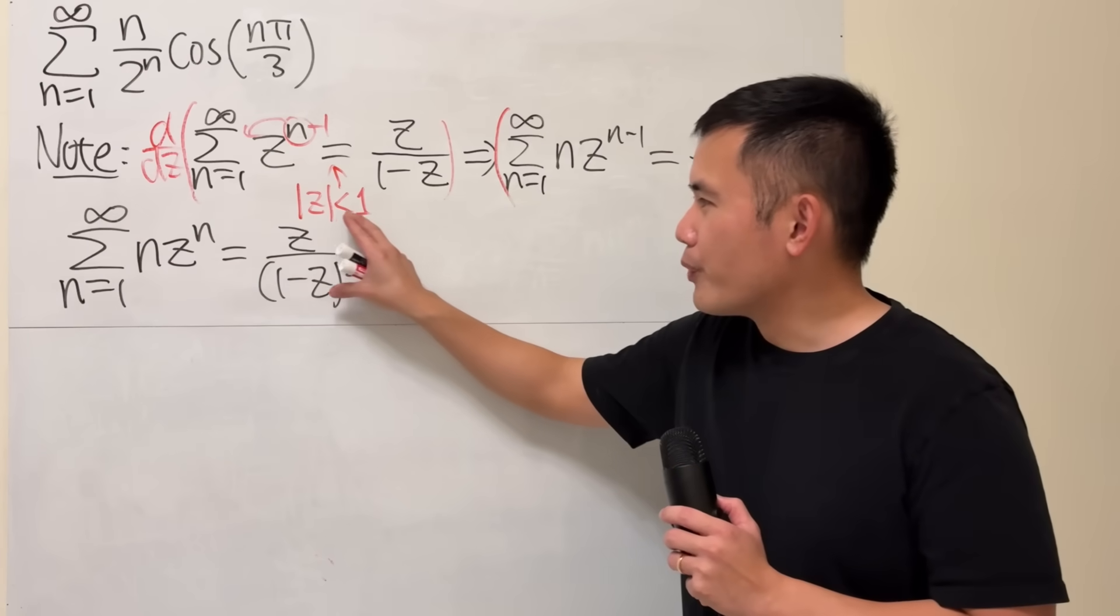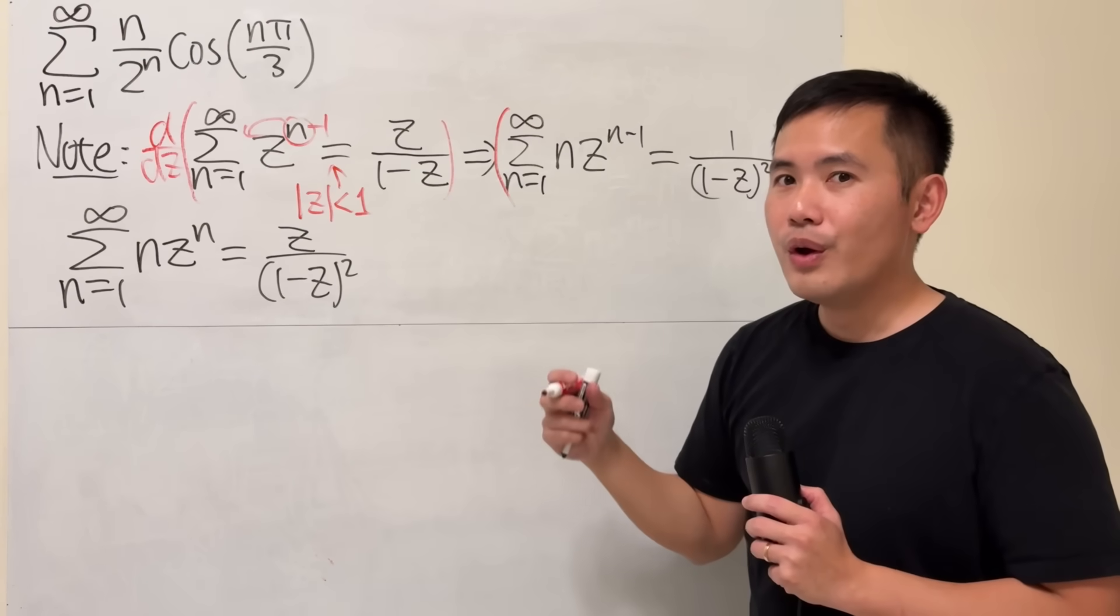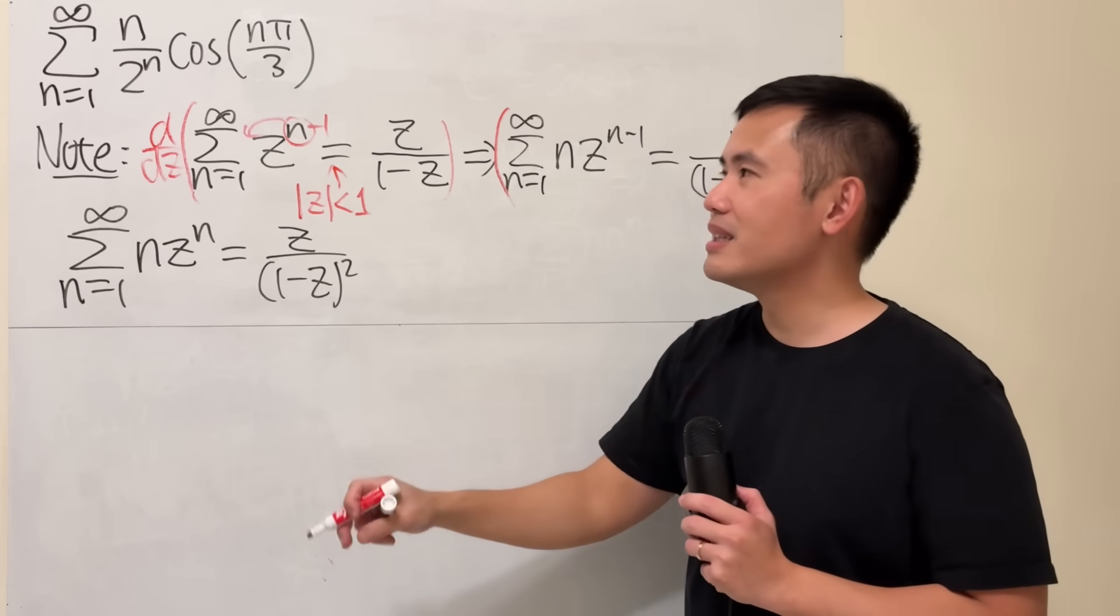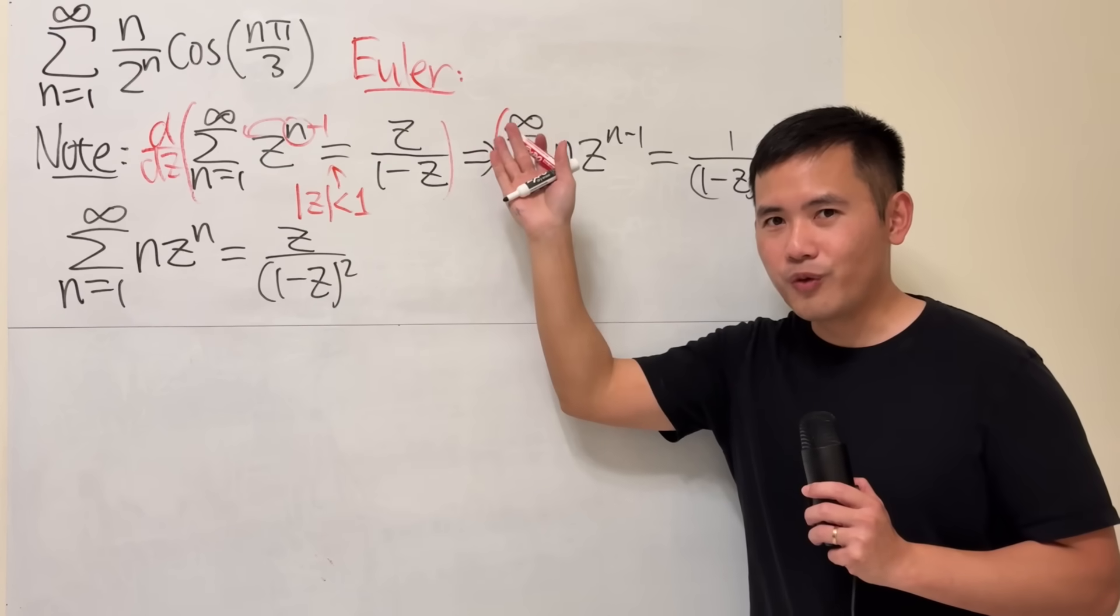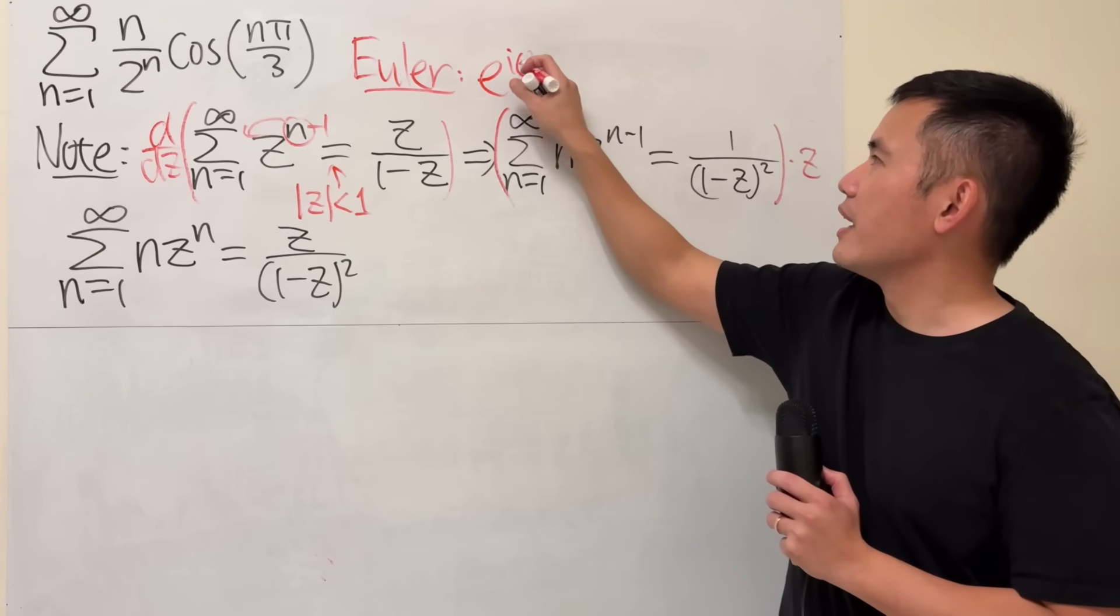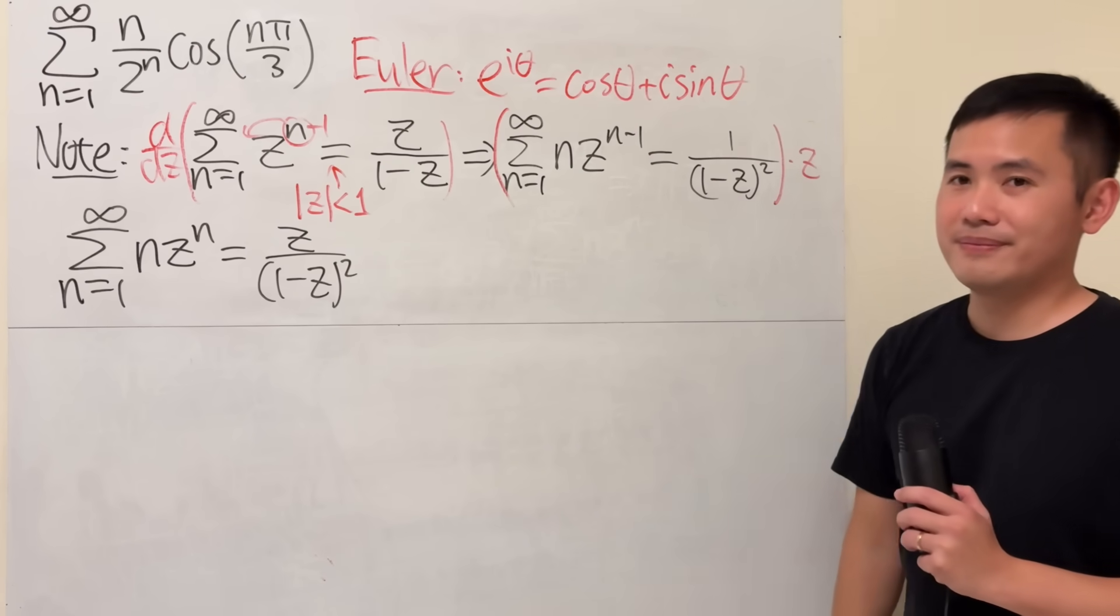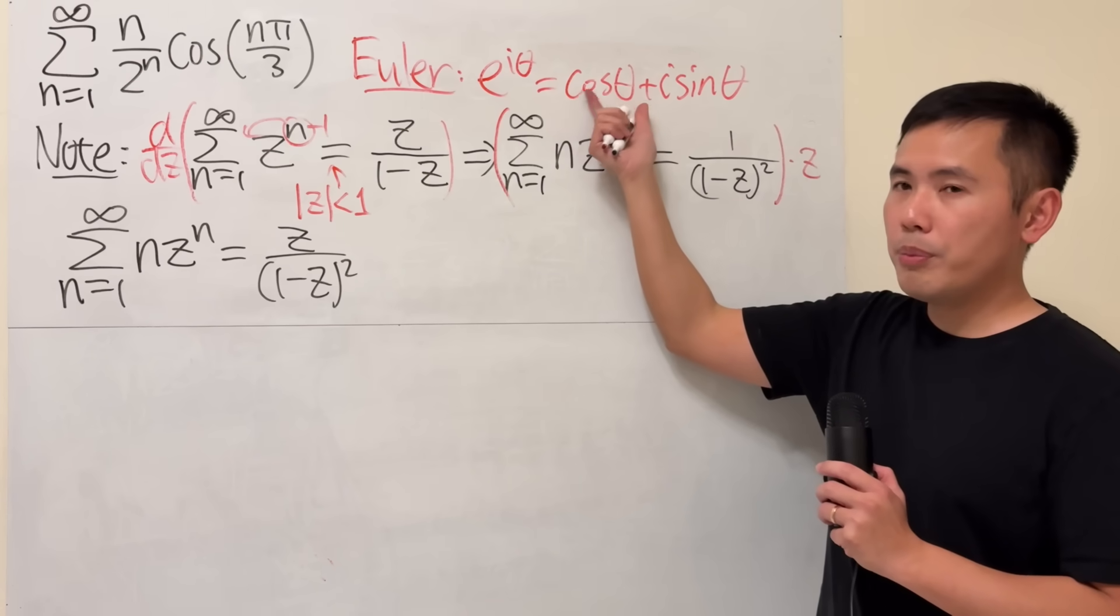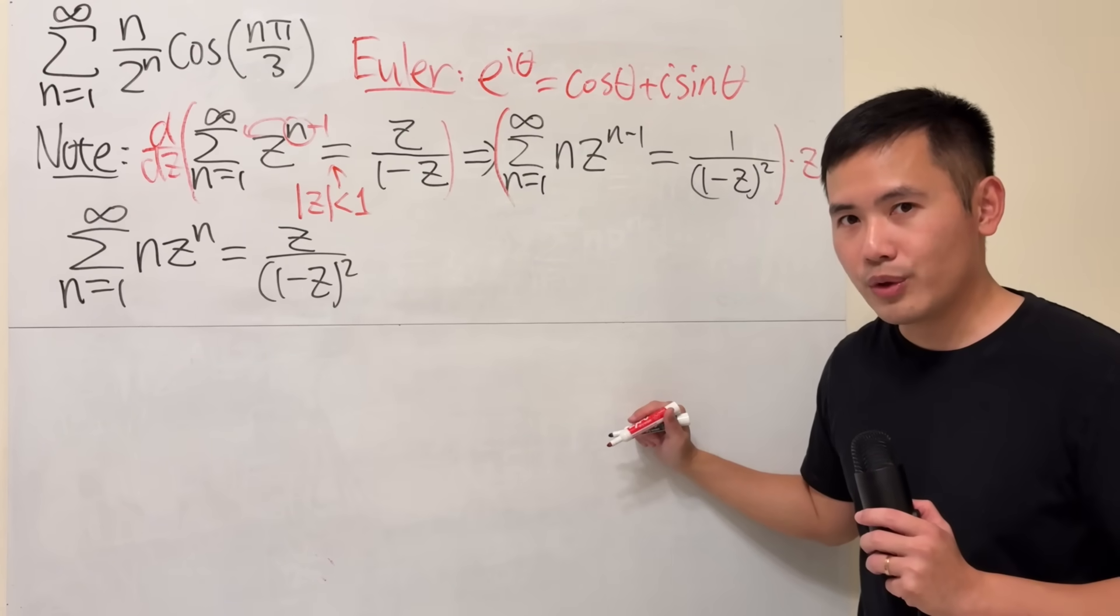We have to think about what z we are going to plug in to end up with this expression. The reason I brought up complex numbers is because when we have the cosine part, we need to use perhaps the most important formula, Euler's formula in complex analysis. e to the i theta equals cosine theta plus i sine theta. The idea is that cosine is just the real part of this.